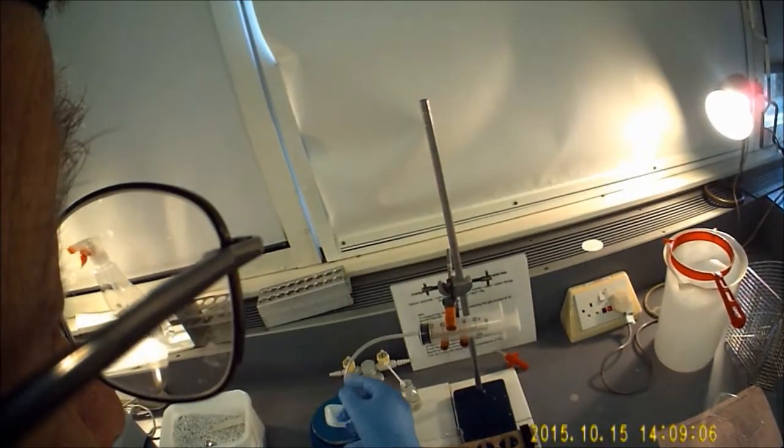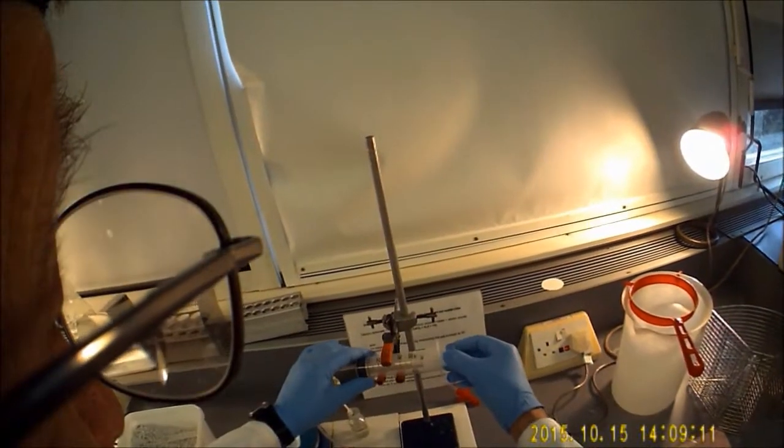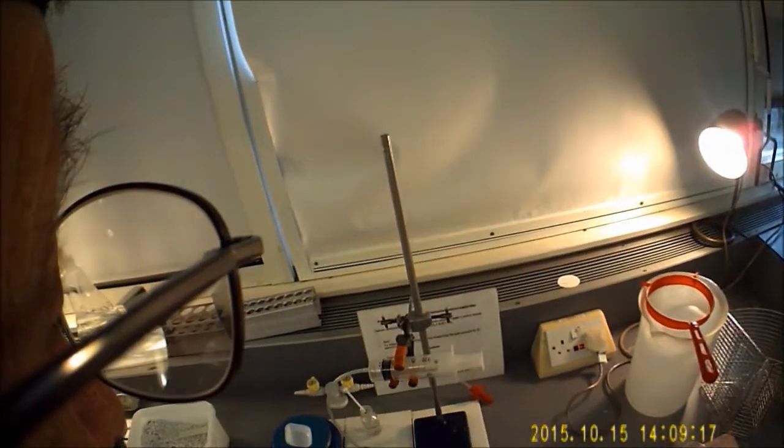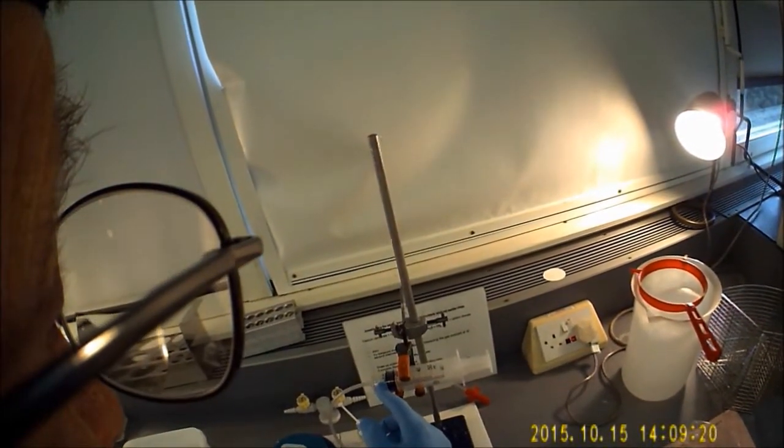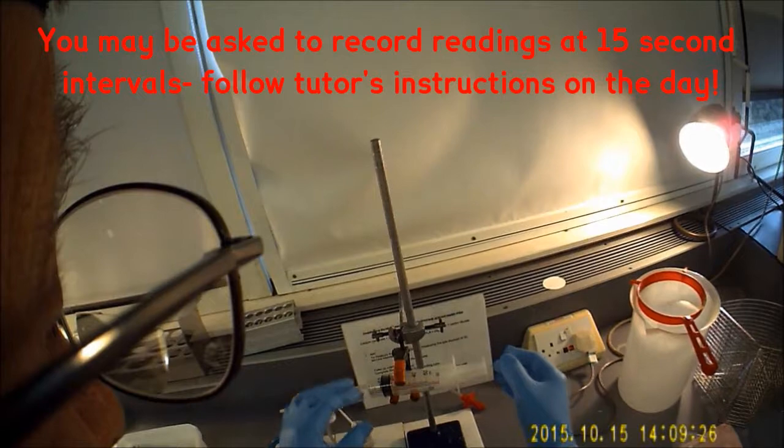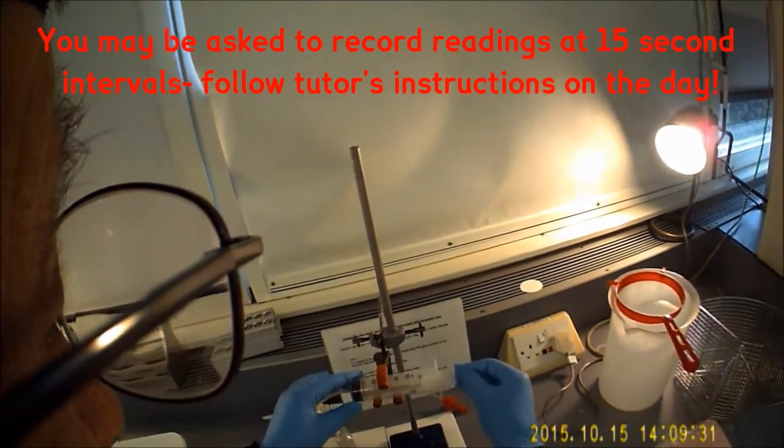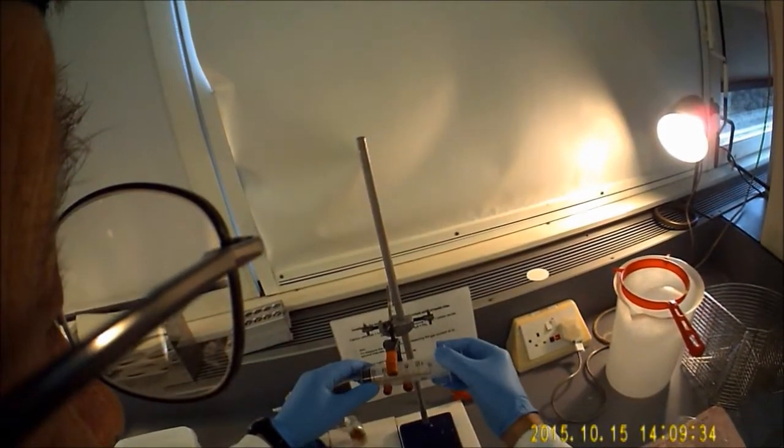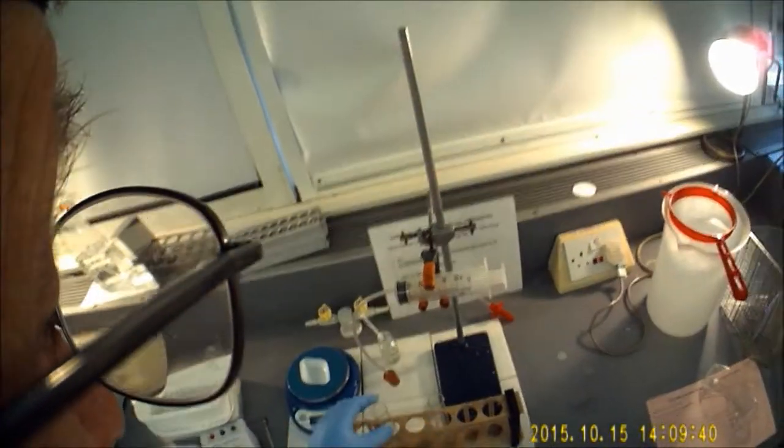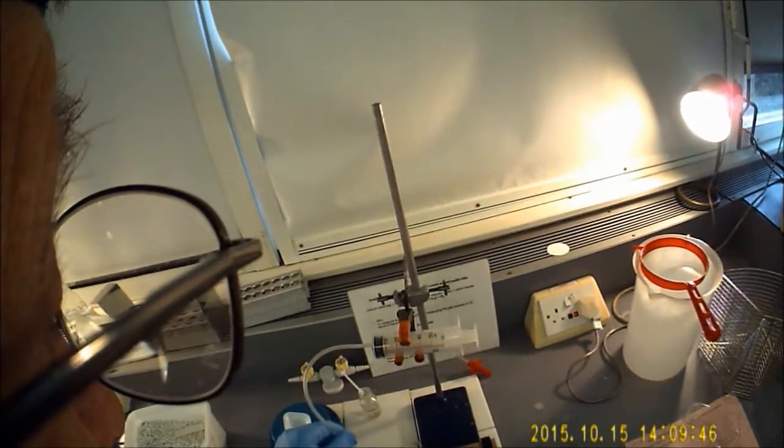It will then start to travel up the tube here and will force the plunger along, and what you'll be doing is measuring the place which the plunger has got to at 30-second intervals, and you'll continue doing that as stated on your lab sheet. So before you start, make sure the plunger is pushed right back, make sure the jaws aren't pinching the actual syringe, and make sure that the things actually fit without having to stretch the tube.